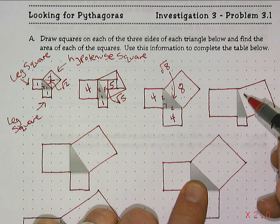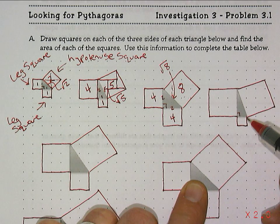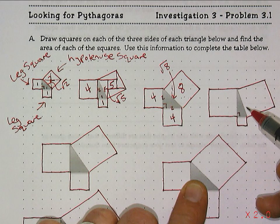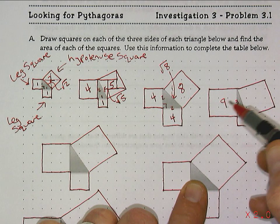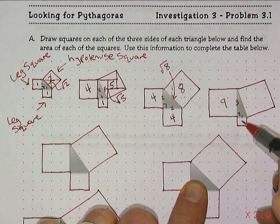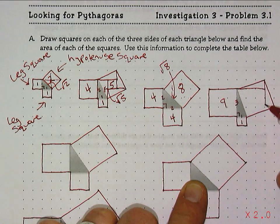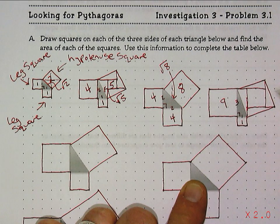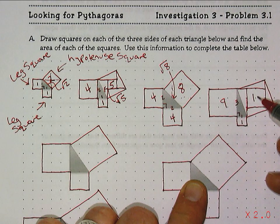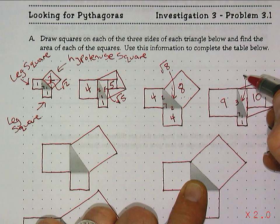Moving on to the next triangle — again a right angle, with a leg, a leg, and a hypotenuse side. The area of the first leg square is nine with side length three, so three squared is nine. The second leg has side length one, so one squared is one. Looking at the parts of the hypotenuse square: four in the middle and one and a half in each of the four triangles, which is six more, for a total of ten. That means the side length of the hypotenuse is the square root of ten.